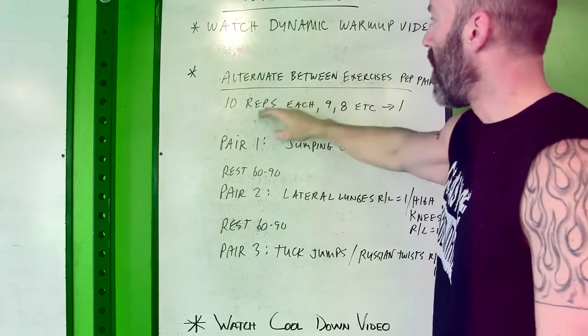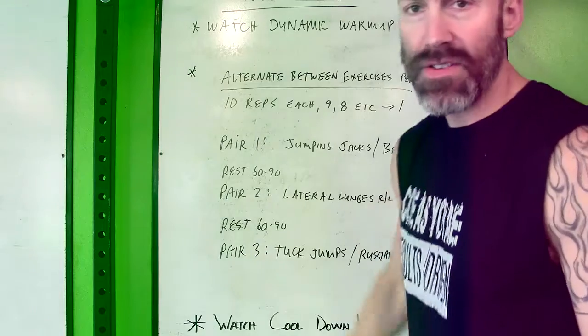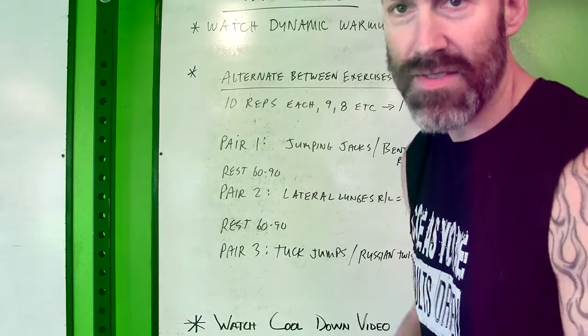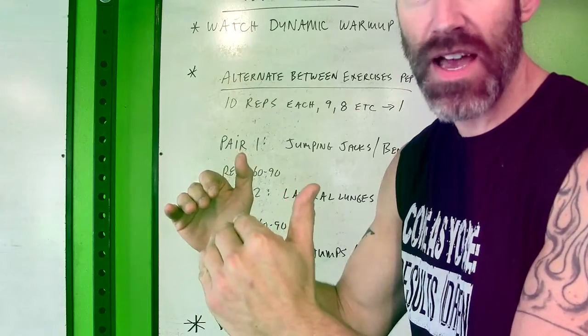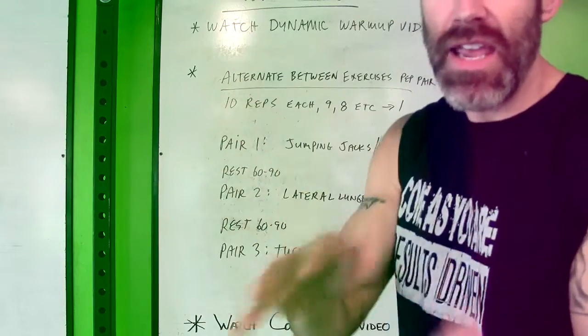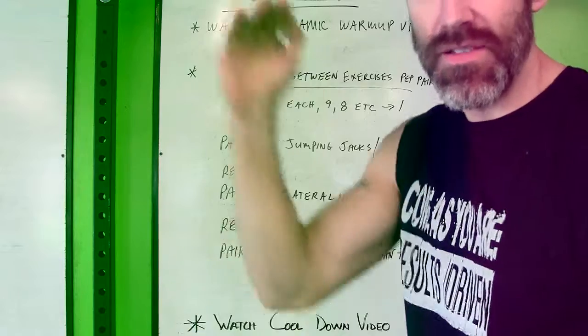What we've got today for you is we're going to alternate between three different pairs of exercises. It's a ladder going downwards, so you're going to do ten reps of each exercise back-to-back, then nine of each, eight of each, seven of each, and so on down to one.